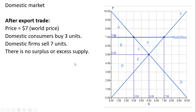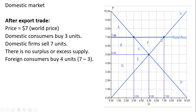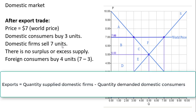There is no surplus or excess supply in this example. The difference between what domestic consumers buy and what domestic firms sell represents exports. So foreign consumers are going to buy four units — this horizontal distance between the demand and supply curves represents exports. Overall, domestic firms sell seven units: three go to domestic consumers and four are exported to foreign consumers.